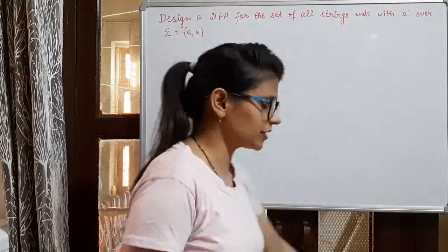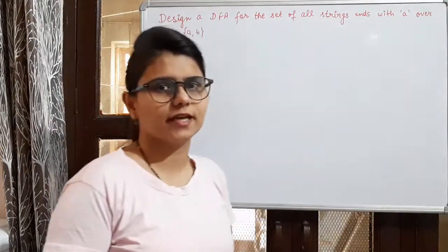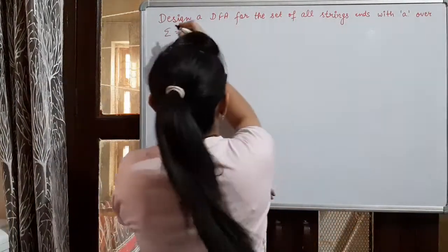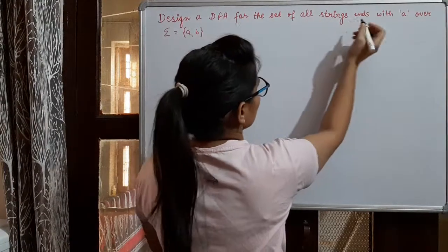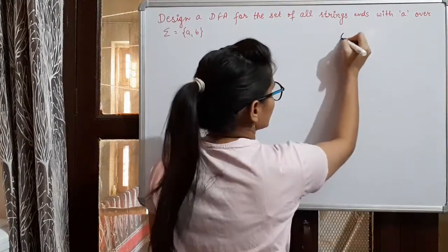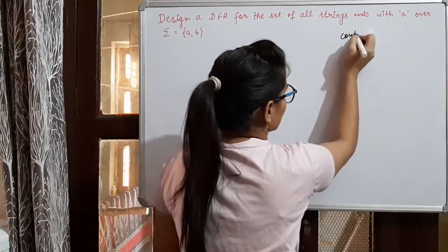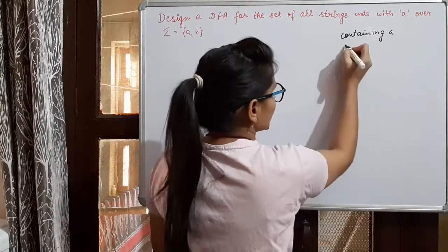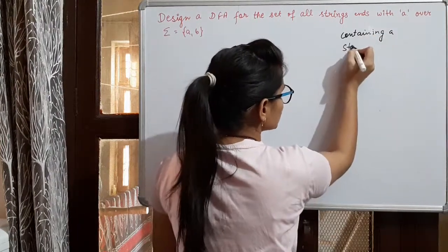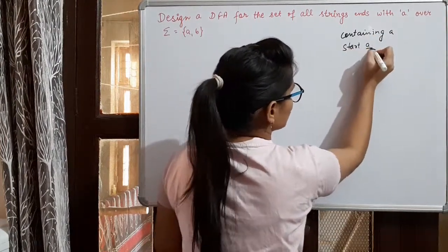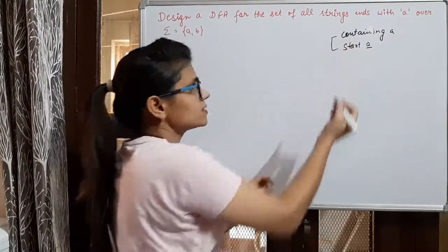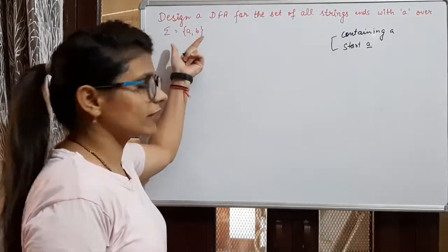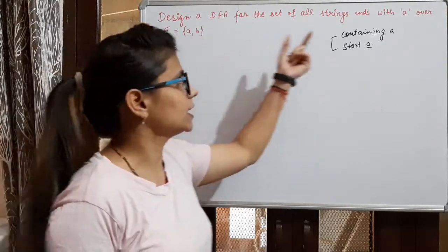In the previous class, we designed DFA for the set of all strings containing A and starting with A. We constructed those two DFAs. Our input alphabet is A and B.